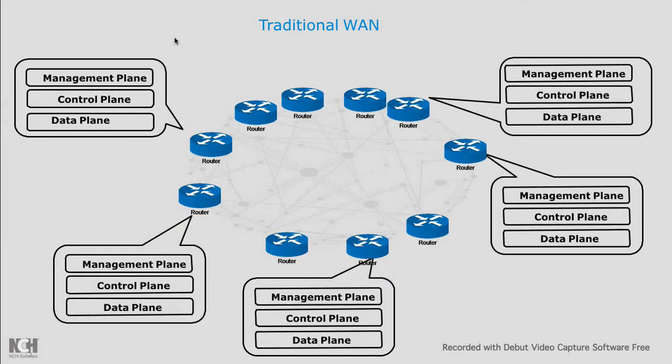This slide pictorially represents all the challenges mentioned: a separate management, control, and data plane for every device, each managed individually. You need to spend a lot of time on each and every router to make connectivity work flawlessly between point A and point B — that is what traditional WAN looked like.